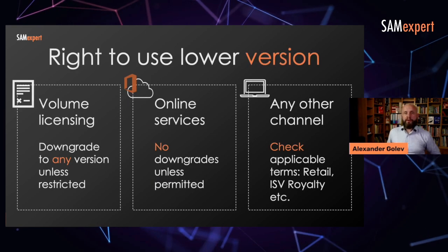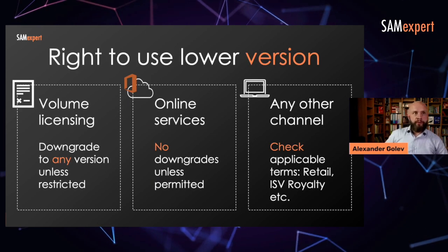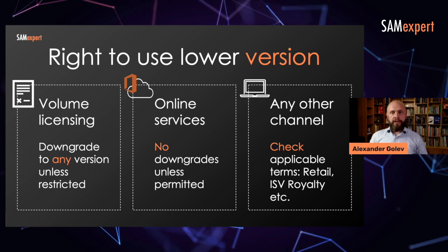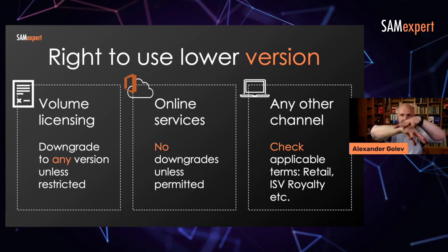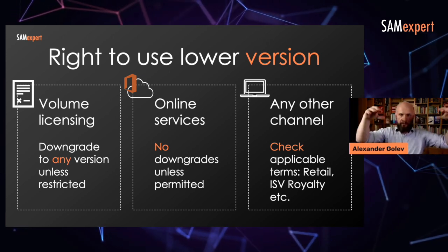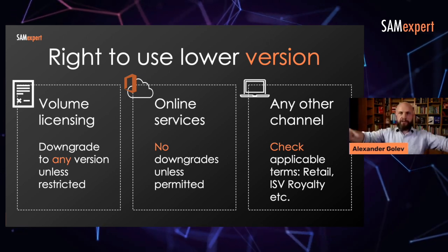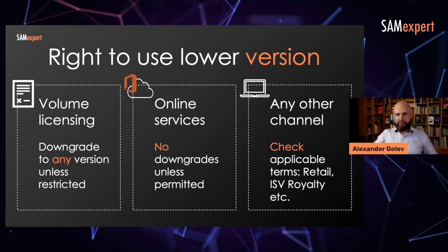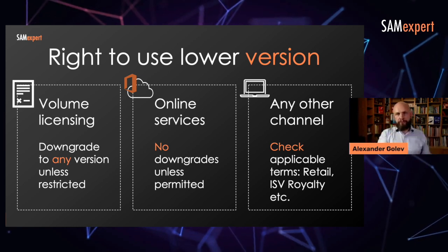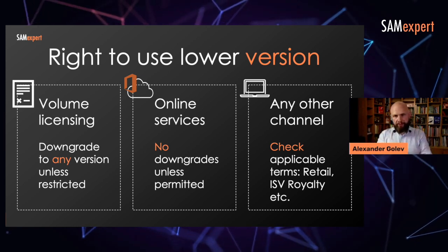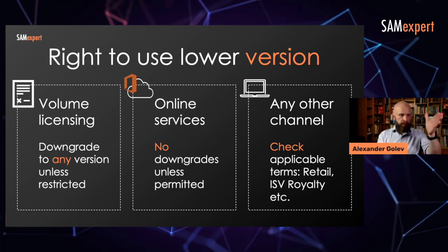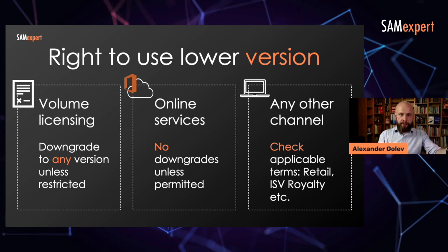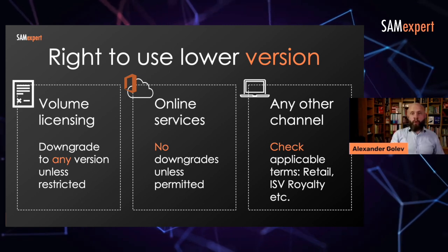In volume licensing, you can downgrade to any version unless it's explicitly restricted. There's an overarching umbrella right given to you that you may actually downgrade to any version from your licensed version. For example, you have a Windows 2019 license and you want to run Windows 2008 R2 — please, go ahead.